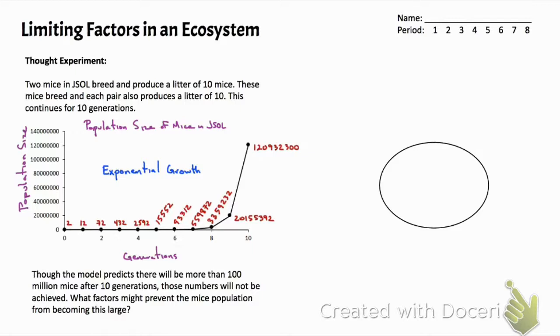These numbers will never be achieved, and there are a number of reasons for this. We might start to think about what kind of factors could prevent the mouse population from becoming that large. Our focus here is on limiting factors.